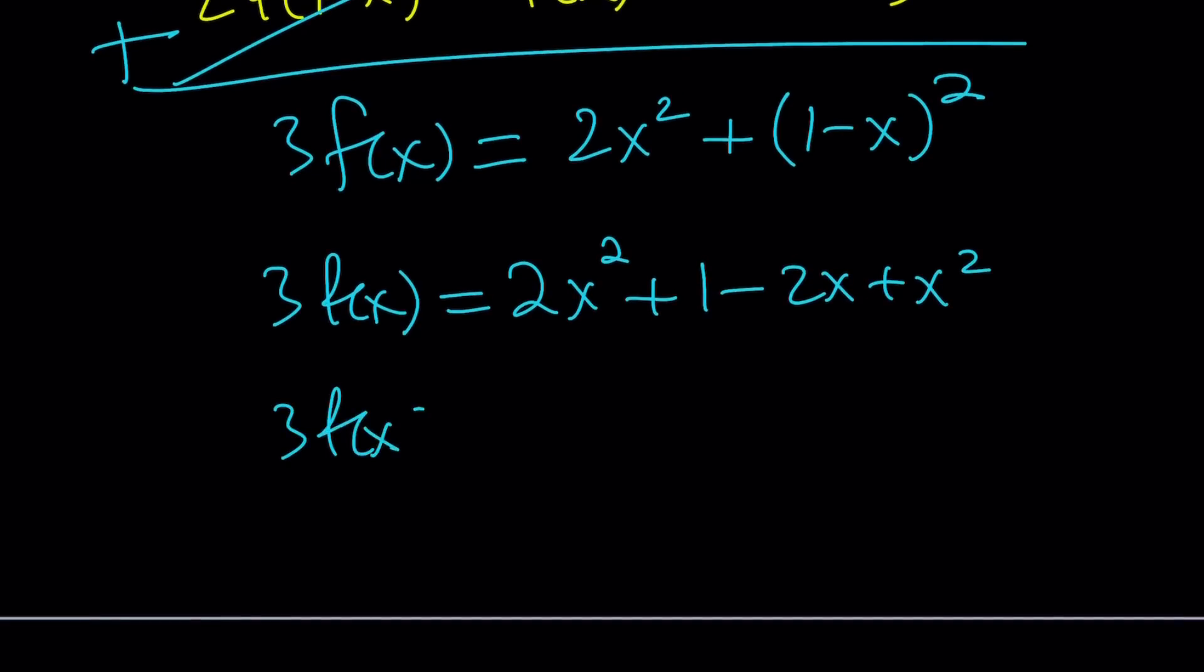From here, we get 3f(x) equals, now we have 2x² and x², their sum is 3x² minus 2x. If you want to write things in standard form, that's what it looks like. But this is 3 times f(x).